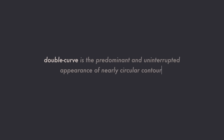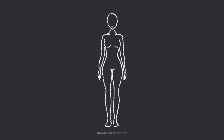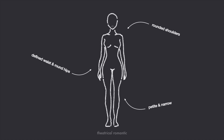Theatrical Romantic: double curve and petite. If you have the theatrical romantic body type, then your dominant features are double curve and petite. Double curve is the predominant and uninterrupted appearance of nearly circular contours in individual features and overall silhouette. Those with double curve not only have a defined waist and rounded hips, but rounded shoulders as well, and the arc of their curves is almost circular rather than ovular and elongated. The theatrical romantic's curves are her most dominant feature. She is also slightly more narrow and sharp than the pure romantic and may have a sharper jawline and facial features.